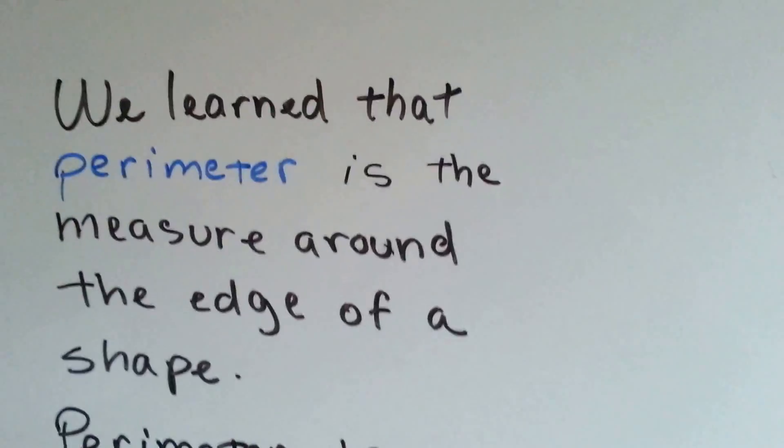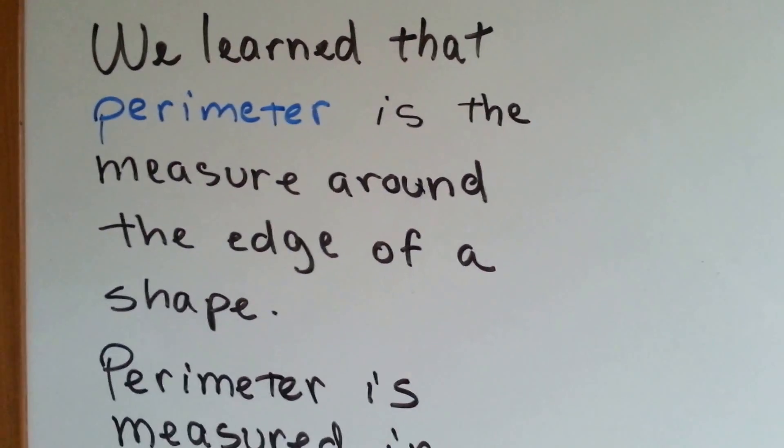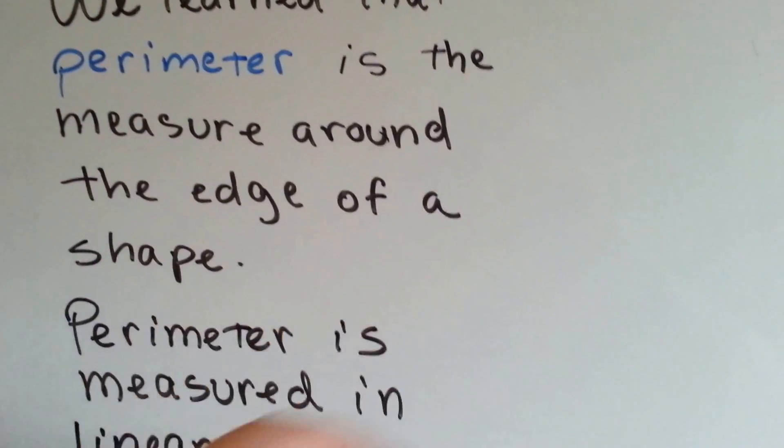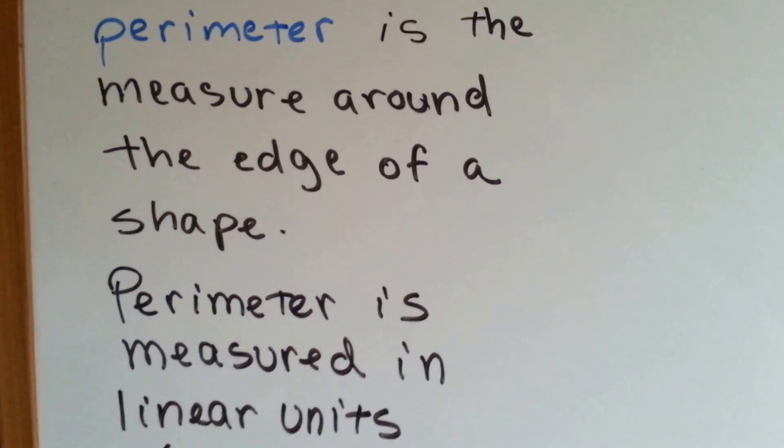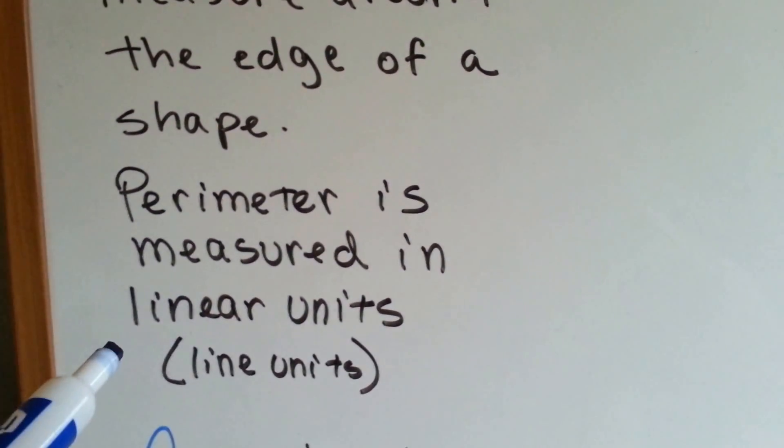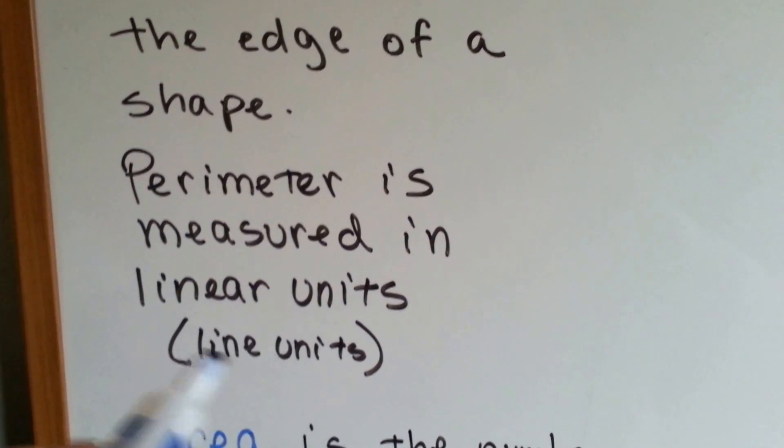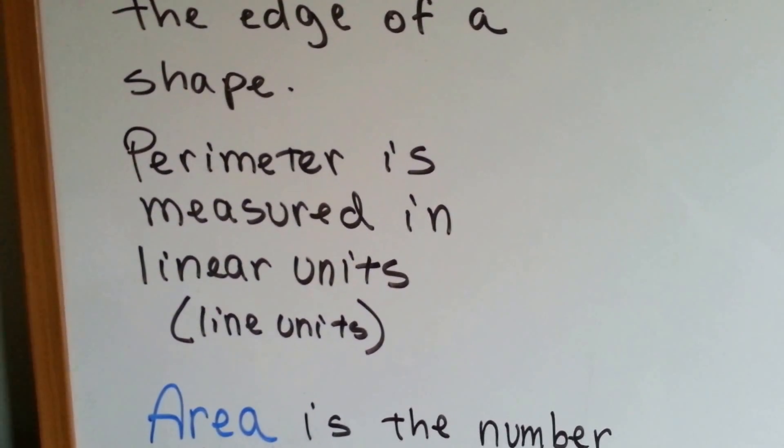Okay, in our previous video we learned that perimeter is the measure around the edge of a shape. It's measured in linear units, in line units, like inches or centimeters, feet.